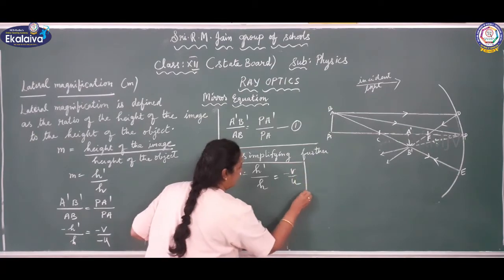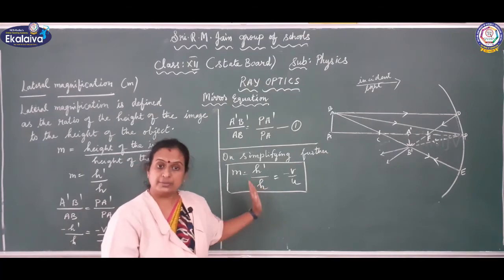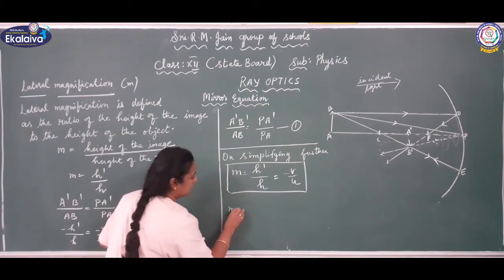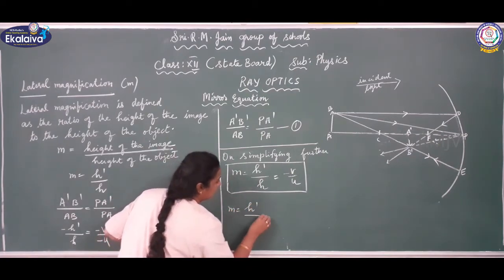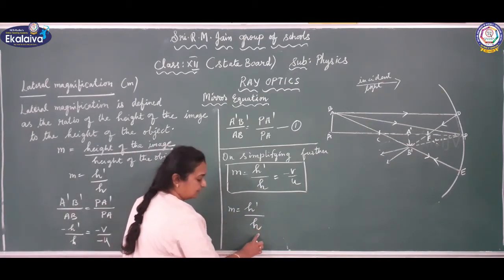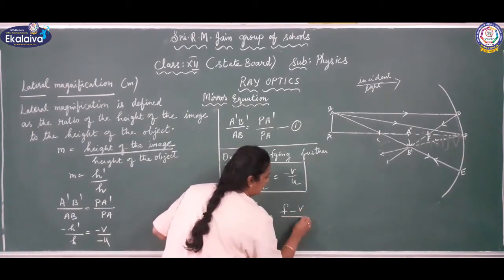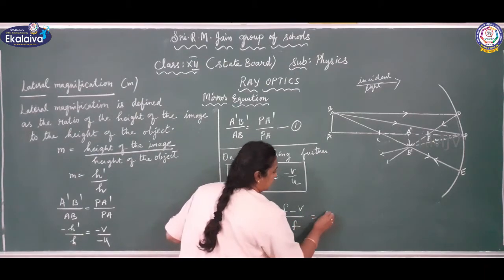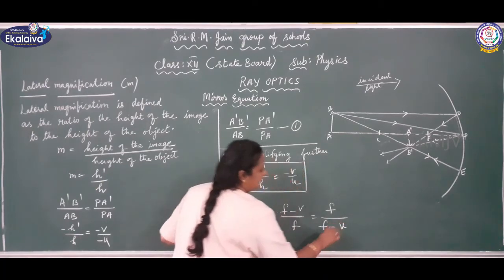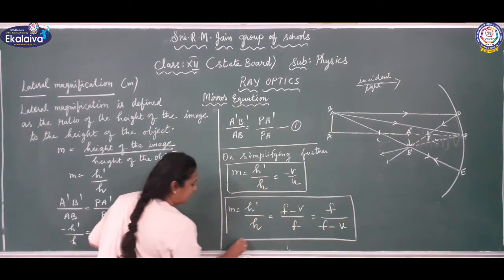So the formula for magnification is M = −v/u. Using the mirror formula, we can also express magnification as M = H'/H = (f − v)/f or M = f/(f − u). These are the formulas for lateral magnification.